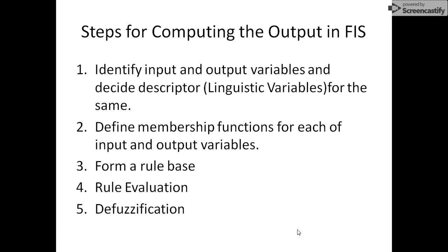Then you will define the membership function for each of the inputs and outputs. If you have three inputs, you will define a membership function for all three. If you have two linguistic variables for output, you will define membership functions for those as well. In the third step, you will form a rule base — the if-then rules: if cloth is very dirty then do this, if cloth is less dirty then do this, and so on. Then you will evaluate the rules to determine the exact output. Finally, once you have the decision, you will convert it into crisp output through de-fuzzification. So the five steps are: identify input-output, define membership functions, form a rule base, evaluate the rules, and de-fuzzify.